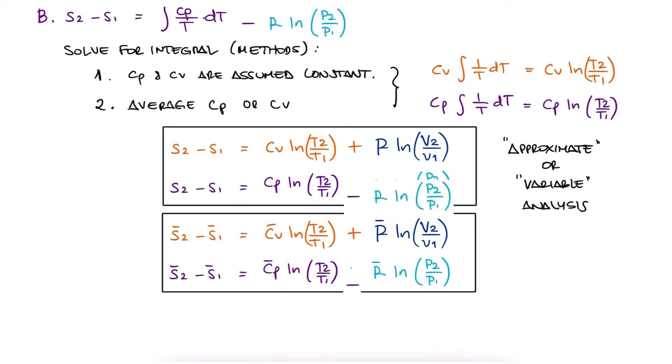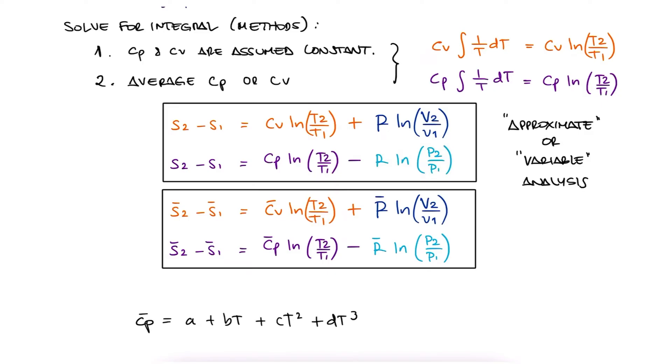Now you'd think that since we have cp bar as a polynomial function of temperature, a more precise way for calculating this integral would be to substitute that polynomial here, like we did for molar-specific enthalpy. And you'd be correct, we can totally do that as the third method.